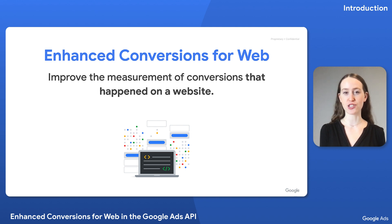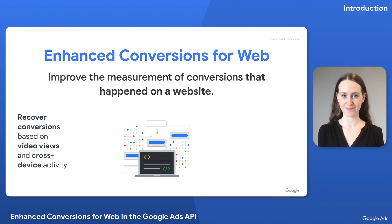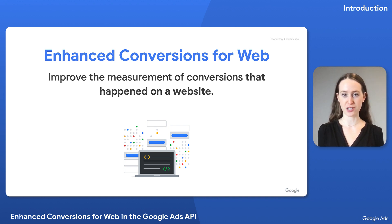Enhanced Conversions for Web is for advertisers that want to improve the measurement of conversions that happened on a website specifically. It allows you to recover conversion types that aren't necessarily observable in certain browsers today — for instance, conversions based on video views or cross-device activity. Google Ads can use those recovered conversions to provide more accurate conversion reporting and better optimize your campaigns.